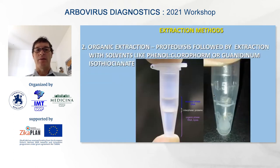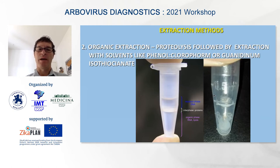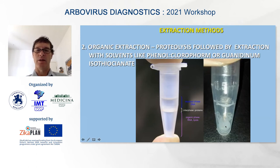Methods that rely on organic extraction remove lipids through the use of strong solvents. You do the proteolysis, then submit the lysate to solvents like phenol, chloroform, or guanidine isothiocyanate. You will have two phases: the organic phase stays below and the aqueous phase stays on top, where the DNA will be. In a second step you precipitate the DNA out of the solution — what you see is pure DNA — then solubilize it again in a buffer and it's ready to go.